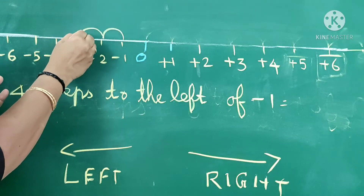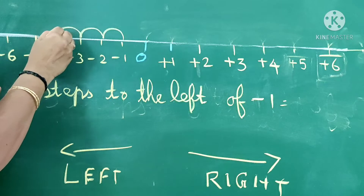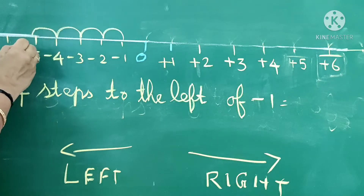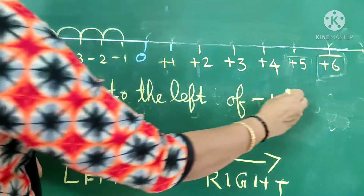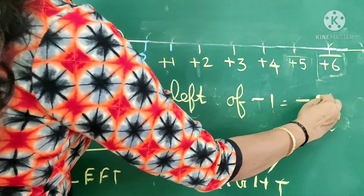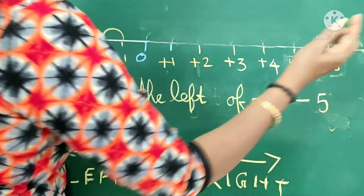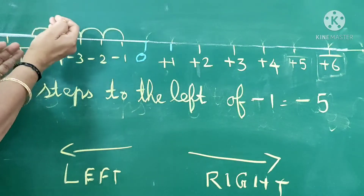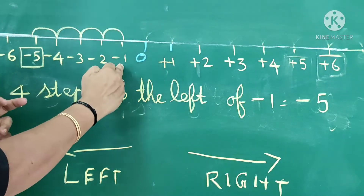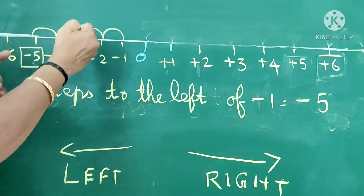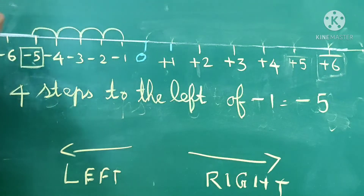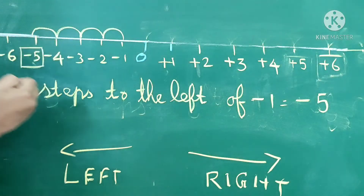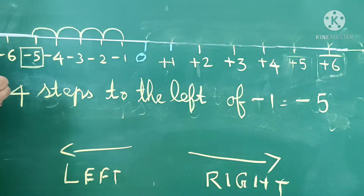We start from here, then count 1, 2, 3, 4. So the answer is negative 5. The answer is negative 5. 4 steps to the left of minus 1 — we start from minus 1, then move 4 steps to the left, and we get the answer as minus 5, that is negative 5.